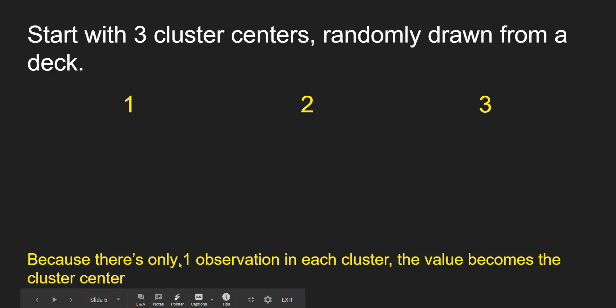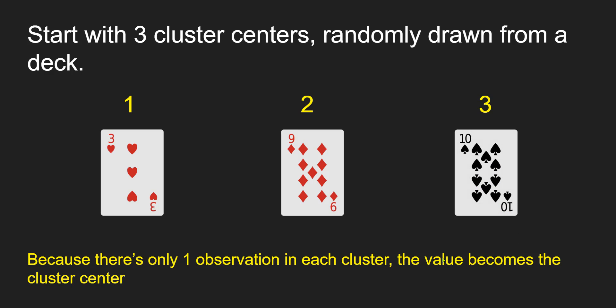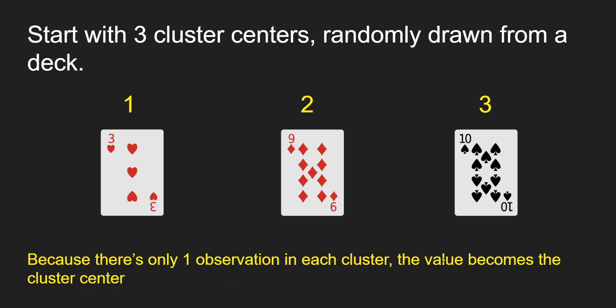Because there's only one observation in each cluster, that is the cluster center. So if we were to do a scatter diagram, three would be one cluster center, nine would be another, and ten would be the third cluster center.